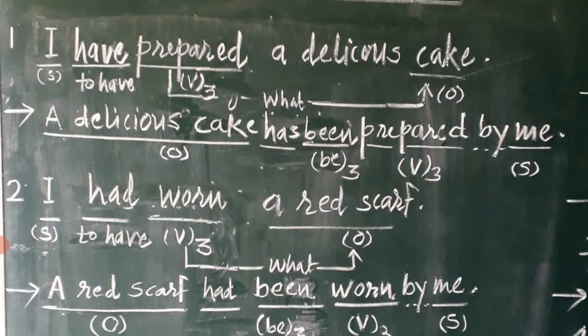Another example is of past perfect tense: 'I had worn a red scarf.' Subject is 'I,' then 'had' as a representative of 'to have' for past. Then 'worn' — the past participle form of 'to wear.' Later on, 'a red scarf' is the answer to the question 'what,' asked to the action verb 'worn,' so it is an object.